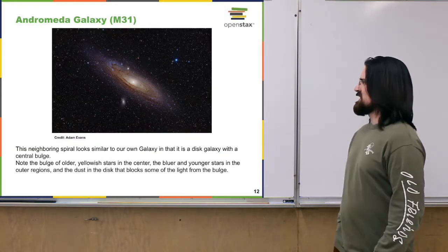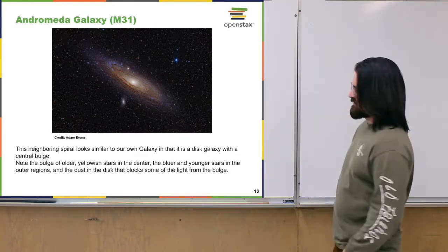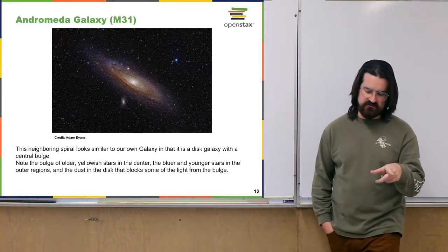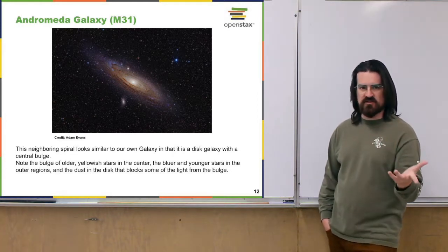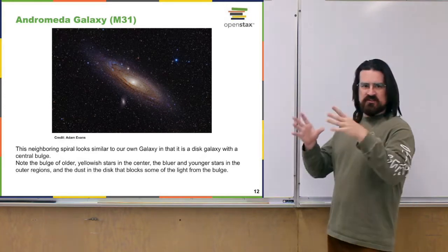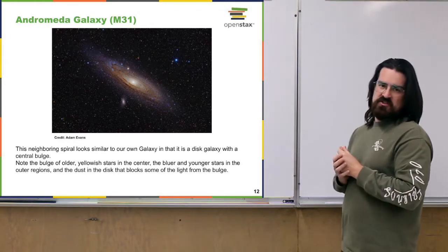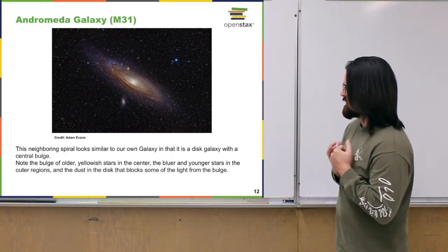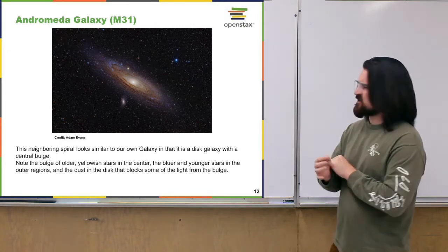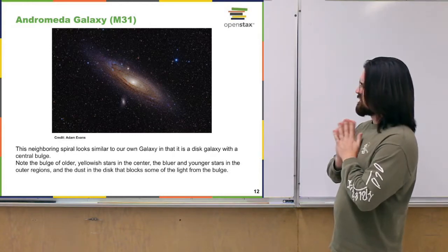This is our neighboring galaxy — the largest of our neighboring galaxies. There are smaller satellite galaxies orbiting the Milky Way, like the Large and Small Magellanic Clouds. But the nearest full galaxy is Andromeda, also known as M31. It seems to be fairly similar to our own — it's a bit bigger, but also a spiral galaxy with pretty much all the similar properties.